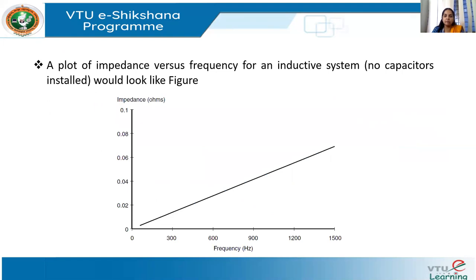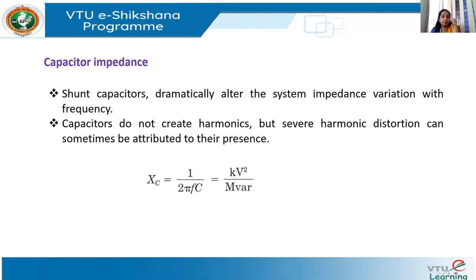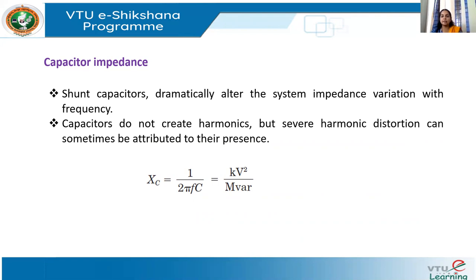The curve showing variation of impedance with respect to frequency shows it is almost linearly varying for an inductive system with no capacitance. However, when capacitance is present — for example, shunt capacitance from capacitor banks — it can dramatically alter the system impedance variation with frequency. Capacitors do not create harmonics themselves, but they can cause severe harmonic distortion affecting system performance.